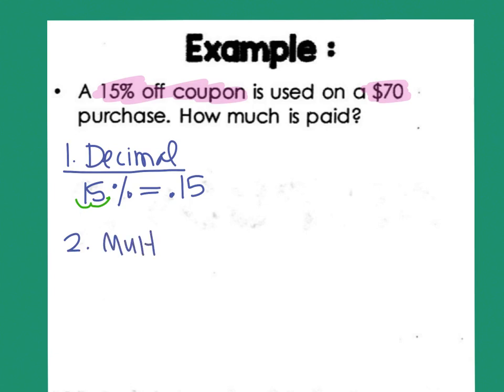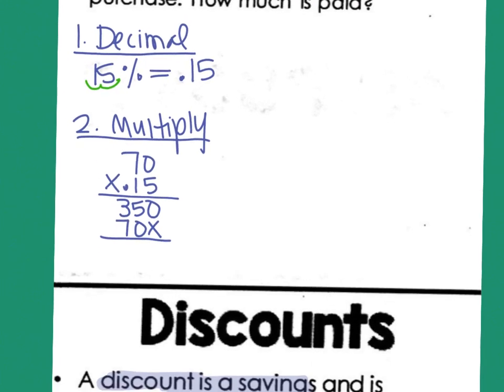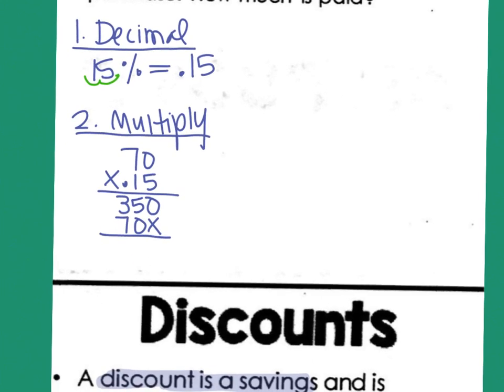Step two was multiply with the original number, which is 70. So 70 times 0.15. 5 times 0 is 0. 5 times 7 is 35. I need a placeholder. Then 1 times 0 is 0, and 7 times 1 is 7. So I'm going to add those things together. 0, 5 plus 0 is 5, and 7 plus 3 is 10. Now I need to know how many digits were behind the decimal in this whole problem. It was 2. So I'm going to start at the back and move the decimal forward 2 times.